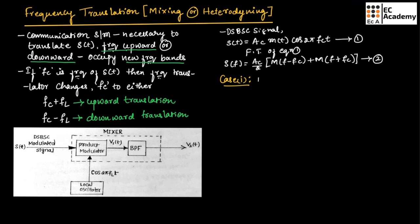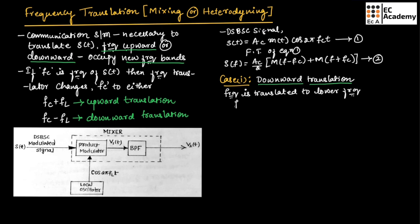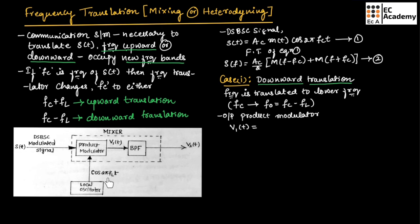Now let us take Case 1, which is downward translation to lower frequencies. This means Fc will be translated to a new frequency F0 = Fc − Fl. The output of the product modulator is V1(T) = S(T) multiplied by the carrier signal, which gives V1(T) = Ac · M(T) · cos(2π·Fc·T) · cos(2π·Fl·T).